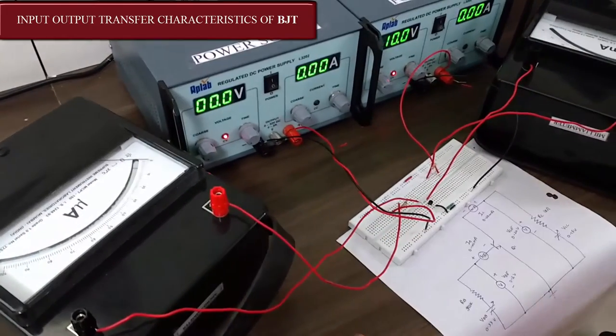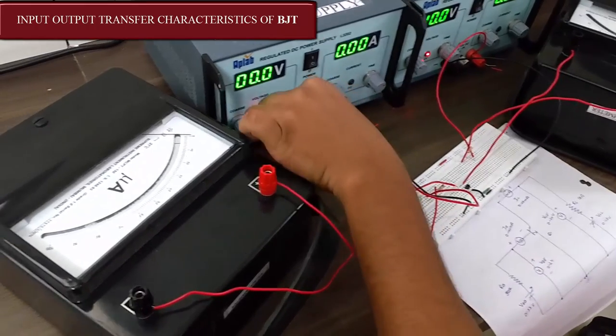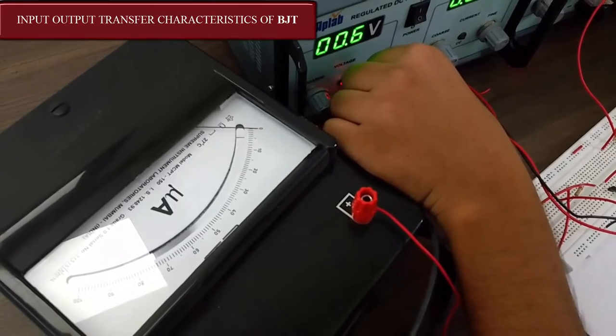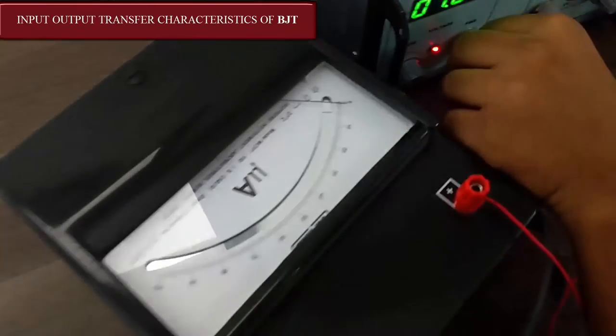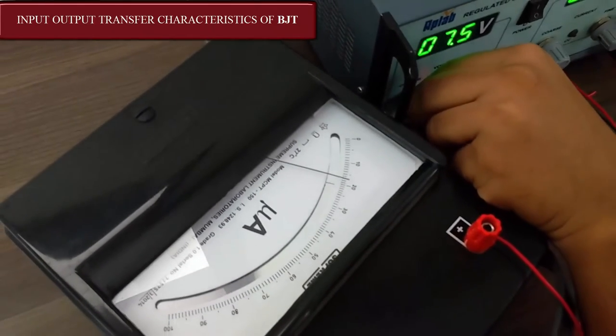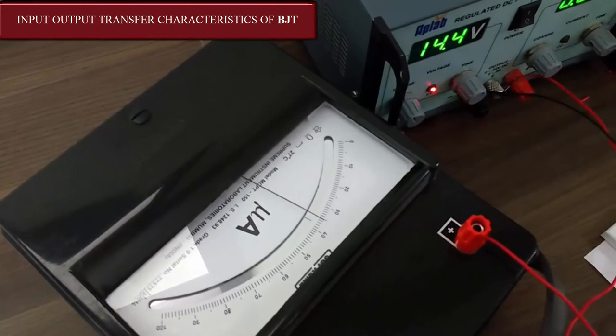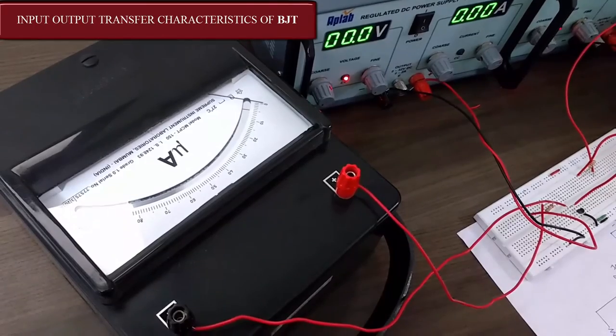Now to see the input output characteristics, we are going to increase VBB. We are slightly increasing VBB. As you can see, we are getting deviation after 0.5V. After that, if we increase the voltage, we are getting an increased input current which is IB. So that was all for the input current.